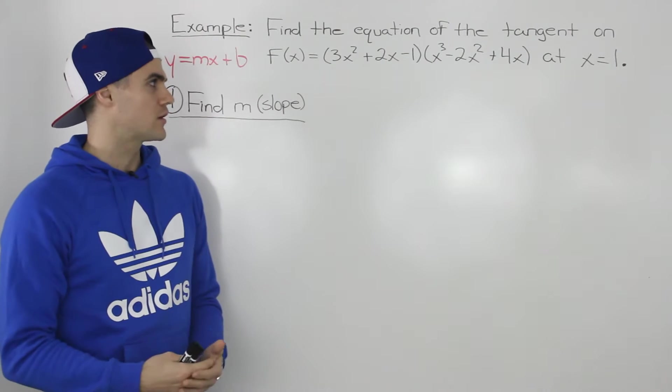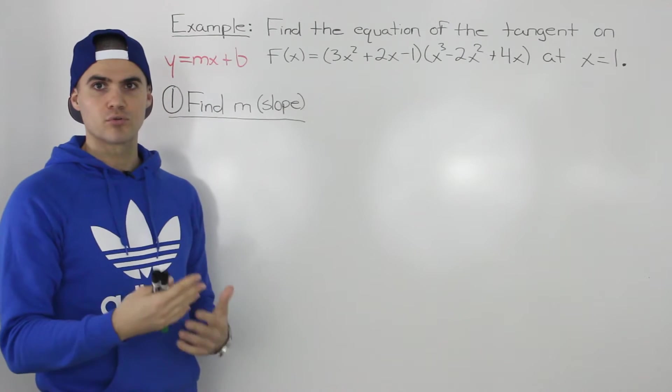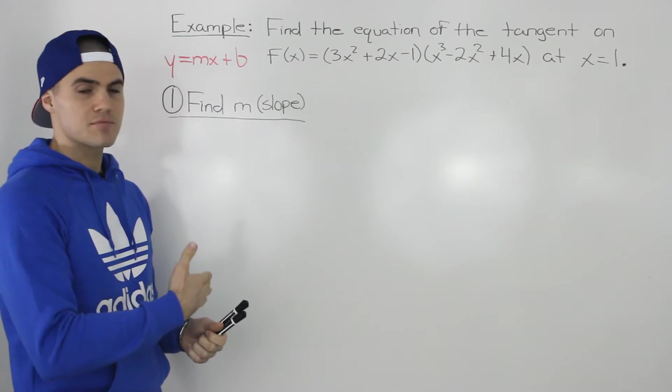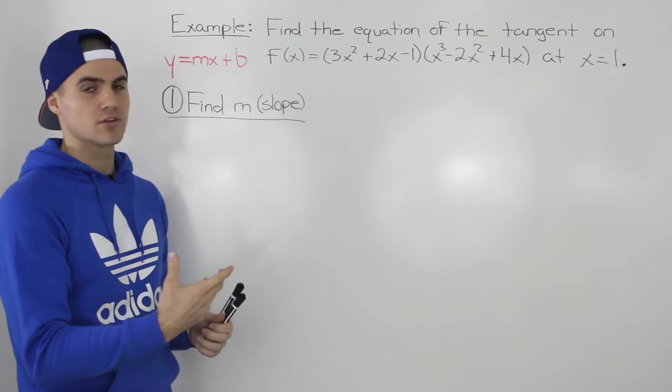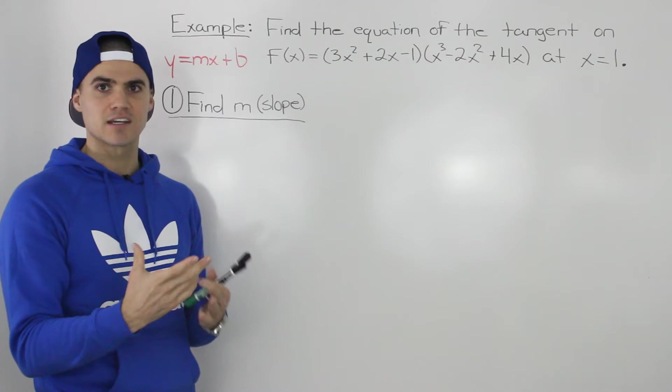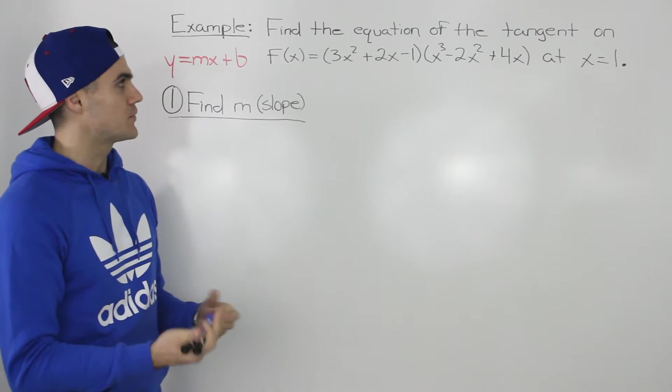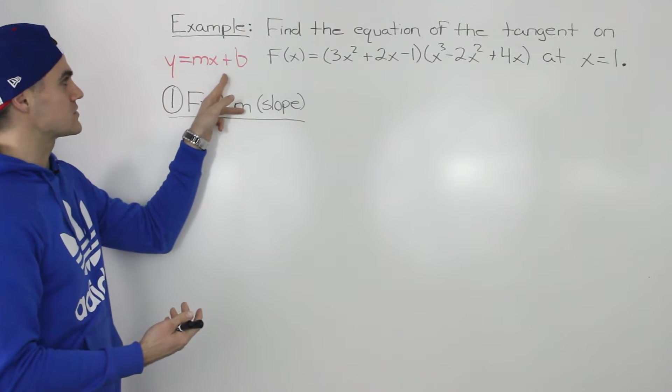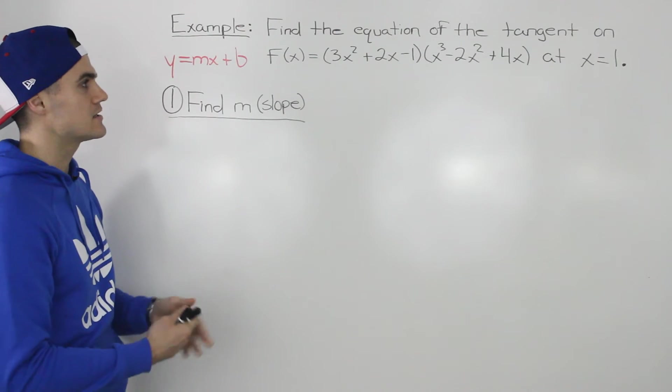To find the equation, we're going to follow the same steps that we've done in previous examples. The steps are always going to be the same when you're finding the equation of a tangent. The only thing that's going to change is the mechanics within the steps. We know that a tangent line is going to take this form, y equals mx plus b, because it is a line.